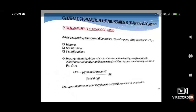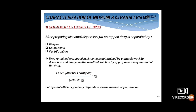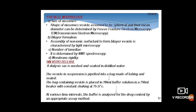Characterization of Niosomes and Transferosomes includes entrapment efficiency, vesicle morphology, and in vitro release. Entrapment efficiency is determined by complete vesicle disruption and analysis of the resultant solution. The formula is: percent entrapment efficiency = (amount entrapped / total drug) × 100. After preparing the niosomal dispersion, unentrapped drug is separated via gel filtration, dialysis, or centrifugation. Vesicle morphology includes size — determined by transmission electron microscopy (TEM) or freeze fracture electron microscopy — bilayer formation characterized by light microscopy, and membrane rigidity and number of lamellae determined by NMR spectroscopy.